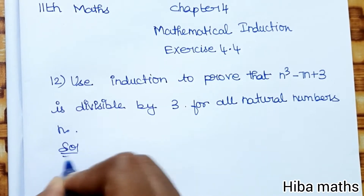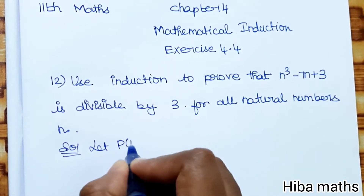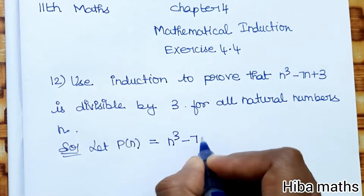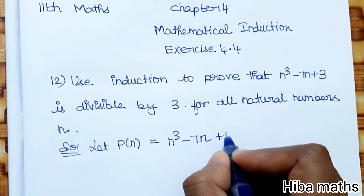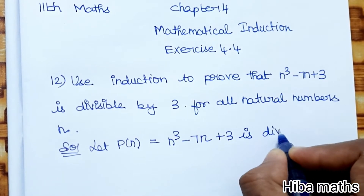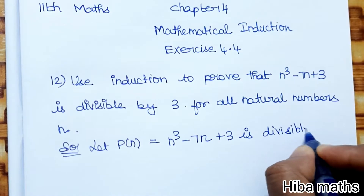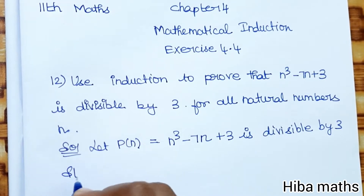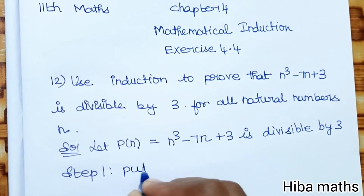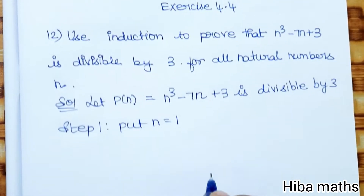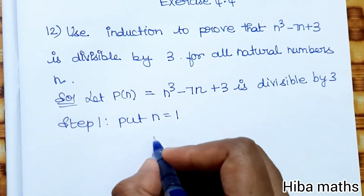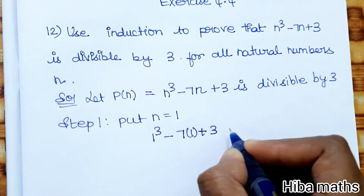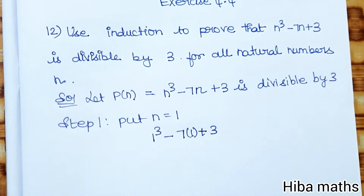In the solution, let P(n) be the statement: n cubed minus 7n plus 3 is divisible by 3. Step 1: substitute n equal to 1. So, 1 cubed minus 7 times 1 plus 3.